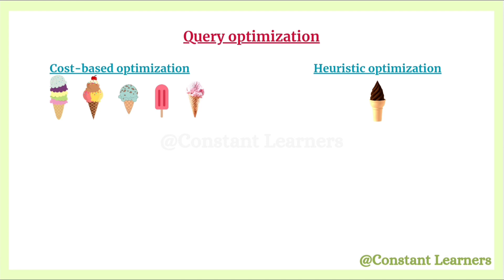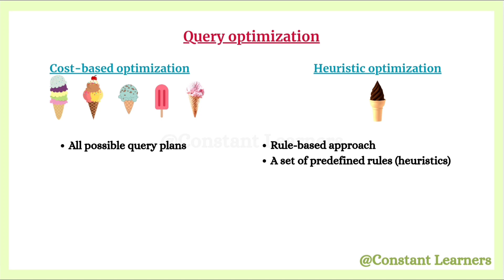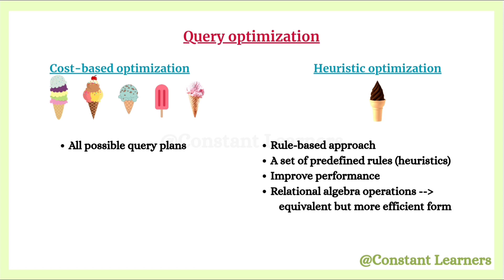Heuristic query optimization in DBMS is a rule-based approach to optimizing queries. Instead of trying all possible query plans like in cost-based optimization, the system follows a set of predefined rules known as heuristics that are generally known to improve performance. These rules are applied to relational algebra operations to transform the query into an equivalent but more efficient form, without necessarily calculating the exact cost.